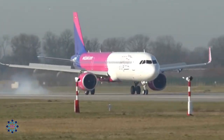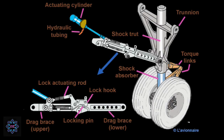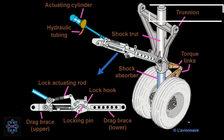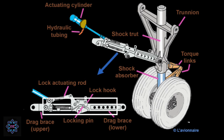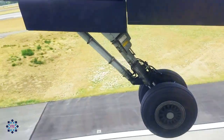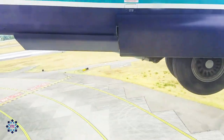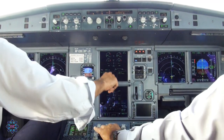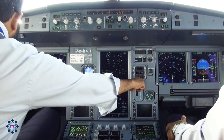Typical components on the system include torque links, trunnion and bracket arrangements, drag strut linkages, and electrical and hydraulic gear retraction and indicators.